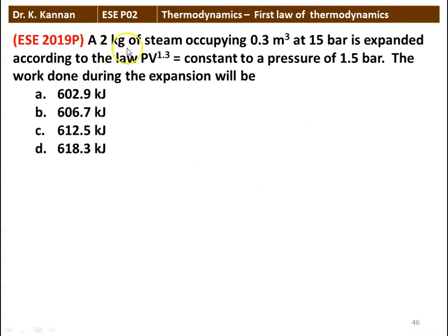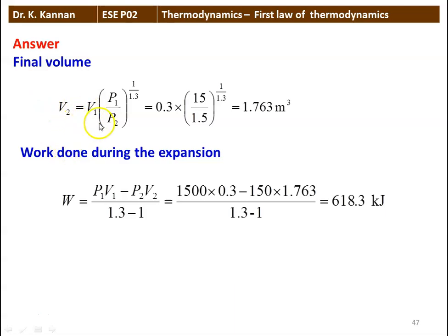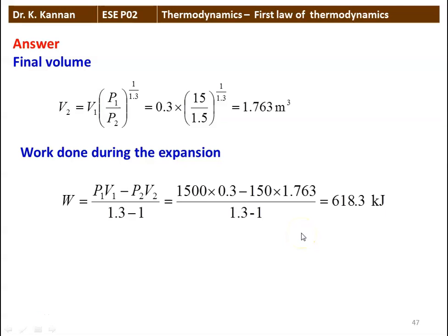Next problem: 2 kg of steam occupying 0.3 m³ at 15 bar is expanded according to PV^1.3 = constant to a pressure of 1.5 bar. The work done during expansion: final volume V2 = V1 × (P1/P2)^(1/1.3) = 0.3 × (15/1.5)^(1/1.3) = 1.763 m³. Work W = (P1V1 − P2V2)/(1.3 − 1) = (1500 × 0.3 − 150 × 1.763)/0.3 = 618.3 kilojoules.